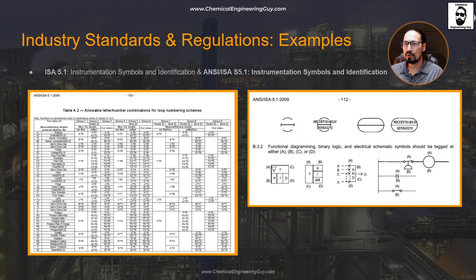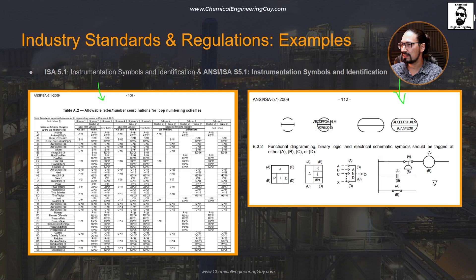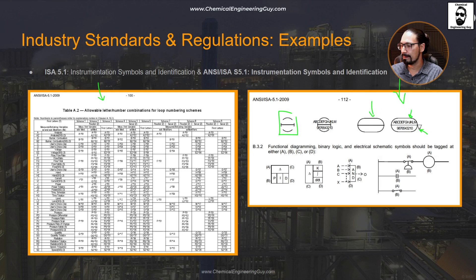This is the ISA 5.1 standard. You can see here the first combination for loop numbering, and these types of standards show how to use the nomenclature. This is a diagram you're going to see a lot — these types of tags. Remember, letters go on top and numbers go on the bottom.